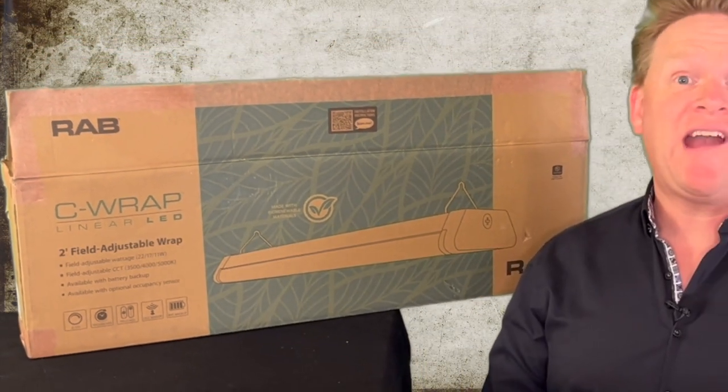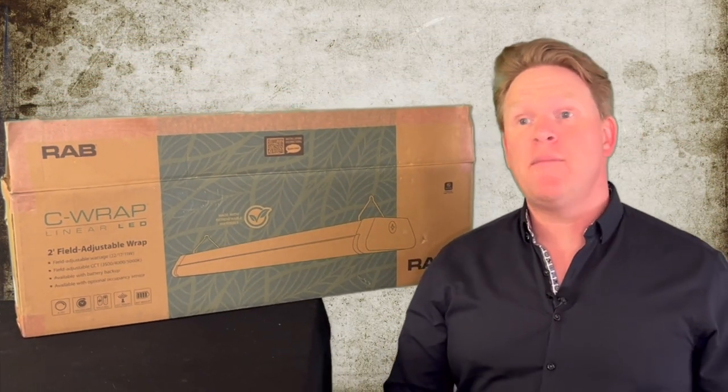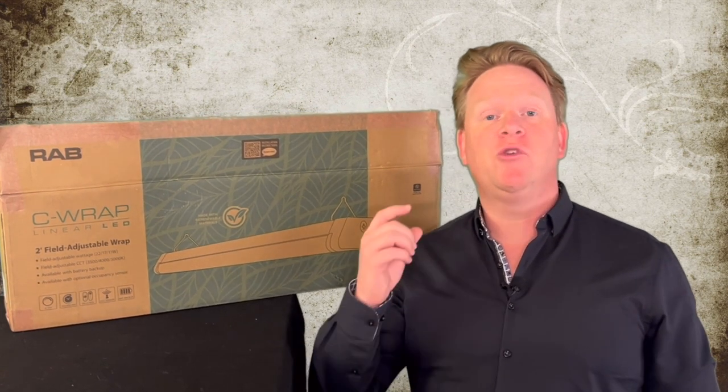Hey, Rab Nation. I'm back to show you another new product from Rab. This one is called the C-Rap. It's a bio-renewable surface wrap product. It's made of coffee chaff and seashells and recycled plastic, and I'm so excited to show you the features of this architectural surface wrap at an affordable price.